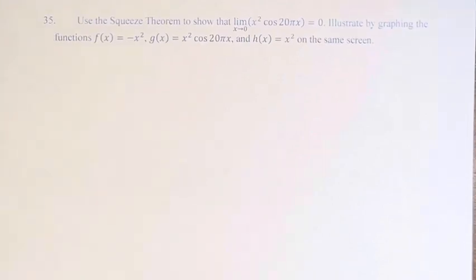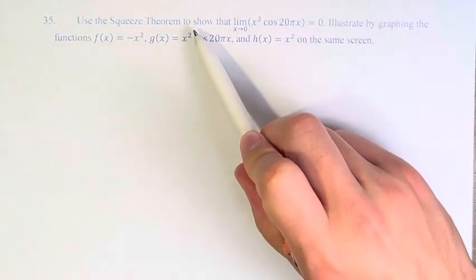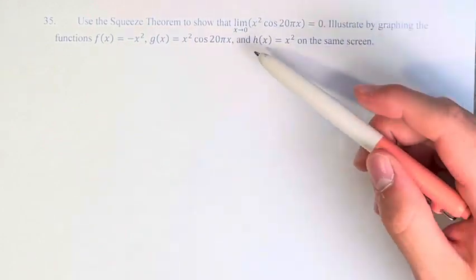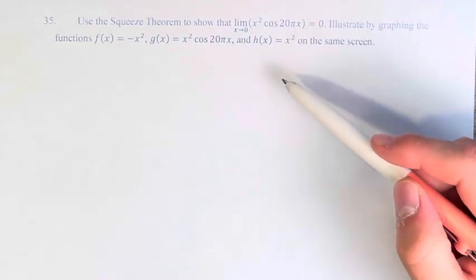Hello and welcome back to another video. In this problem, we're asked to use the squeeze theorem to show that the limit as x approaches 0 of x squared times cosine of 20π x is equal to 0.